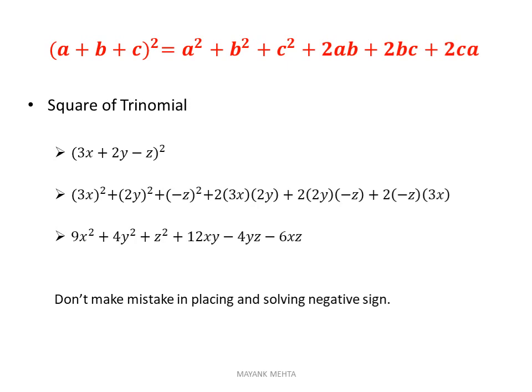Expanding (3x+2y−z)²: first (3x)², then (2y)², then (−z)², then 2×3x×2y, then 2×2y×(−z), then 2×(−z)×3x. Note that (−z)² is positive. Don't make mistakes in placing and solving the negative sign.